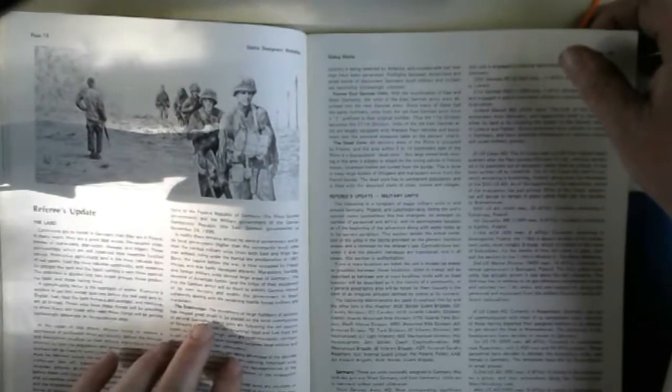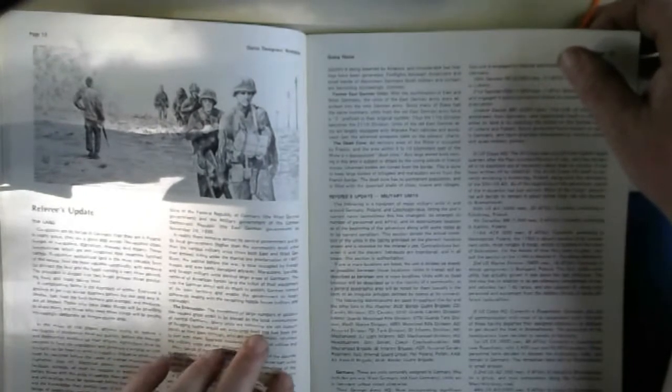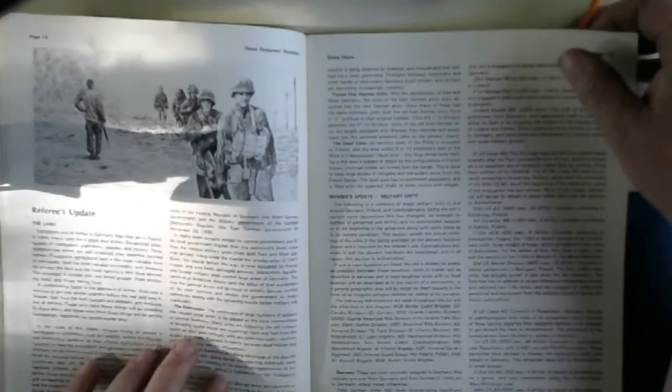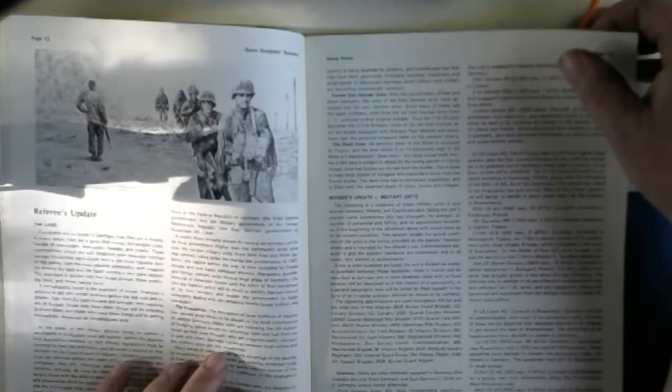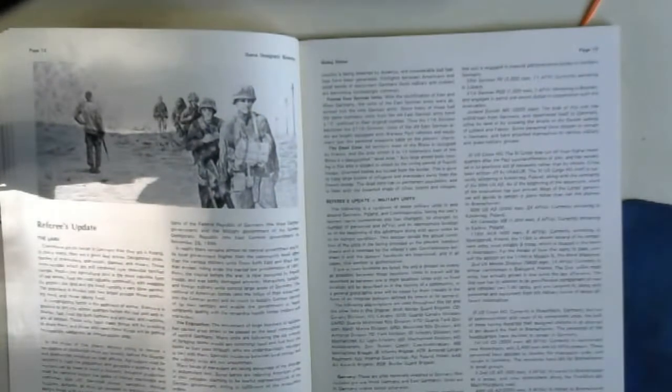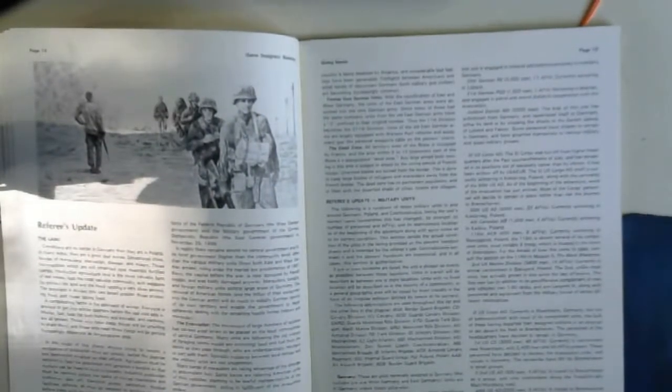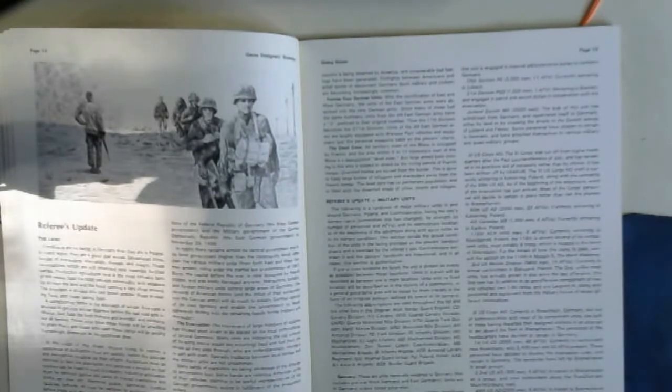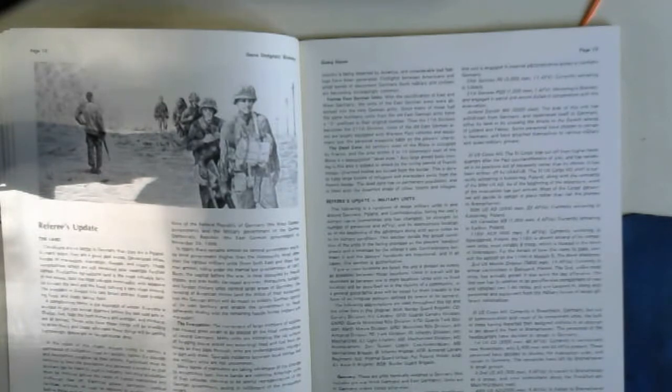This movement of large numbers of soldiers has caused great strain on local communities of central Germany. Many units are following the old custom of foraging - some would say extorting - food and fuel from locals as they pass through, who are understandably reluctant to part with them. Sporadic incidents between local militias and military units are not uncommon. Many bands of marauders are taking advantage of the disorder to accumulate loot. Some bands are relieving American units of their vehicles. In addition, some lawful units of the German army are reluctant to allow tanks and APCs to travel to the rear where they need them at the front. There are some German units and individuals who are upset about what they feel is the abandonment of Europe by the United States military and are taking pot shots or expressing disagreements to the player characters as they pass through.